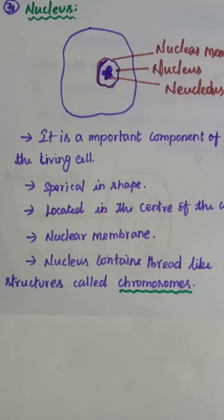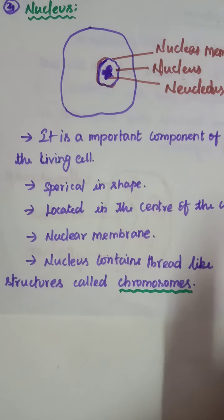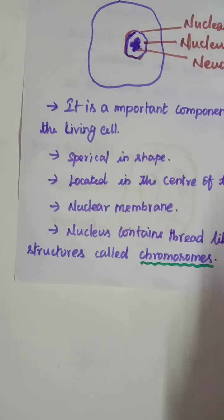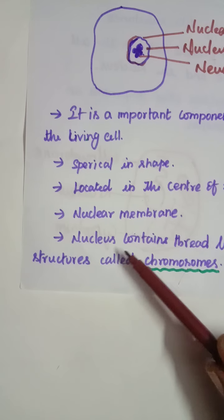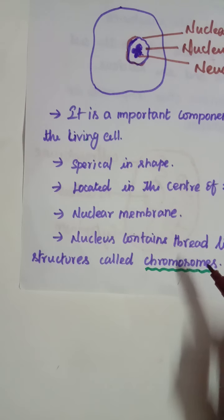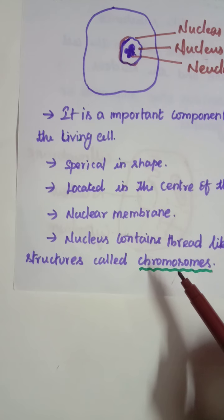The nucleus contains thread-like structures called chromosomes. These chromosomes carry hereditary information. These chromosomes present in the nucleus carry genes, and they help in the inheritance and transfer of characters from the parents to the offspring.